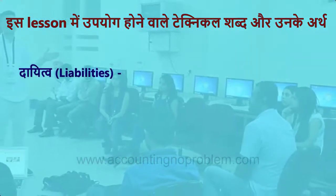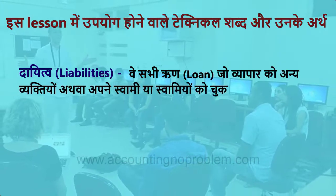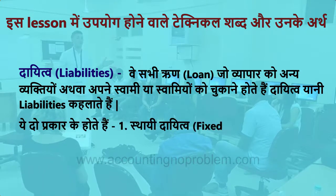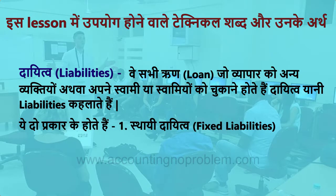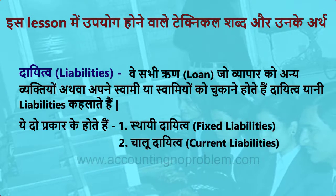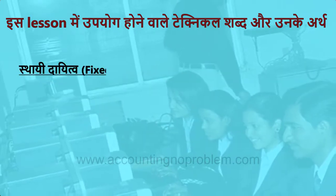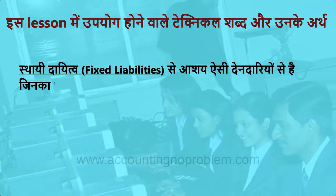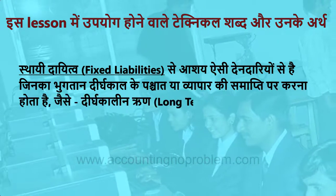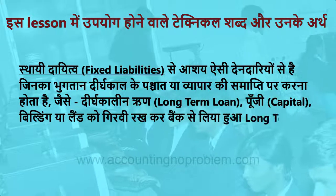दायित्व यानि Liabilities — वे सभी ऋण या loan जो व्यापार को अन्य व्यक्तियों अथवा अपने स्वामी को चुकाने होते हैं, दायित्व यानि Liabilities कहलाते हैं। ये दो प्रकार के होते हैं: स्थाई दायित्व यानि Fixed Liabilities जिन्हें Long Term Liabilities भी कहते हैं, और चालू दायित्व यानि Current Liabilities जिन्हें Short Term Liabilities भी कहते हैं। स्थाई दायित्व से आशय ऐसी देनदारियों से है जिनका भुगतान दीर्घकाल के पश्चात या व्यापार की समाप्ति पर करना होता है, जैसे long term loan, पूंजी, building या land को गिरवी रखकर bank से लिया हुआ long term loan इत्यादि।